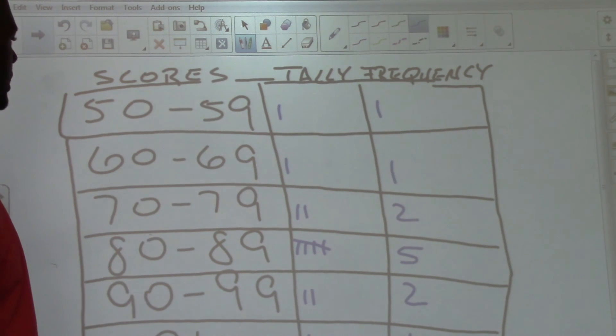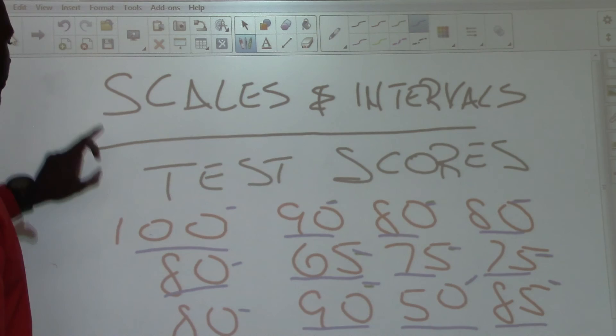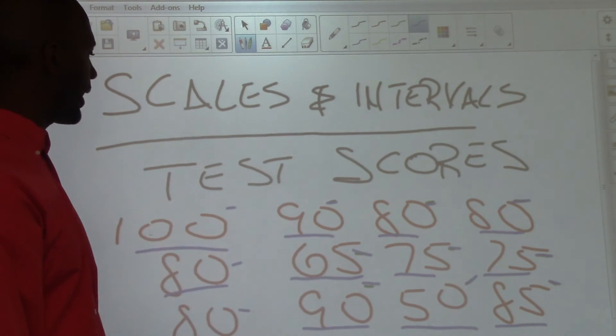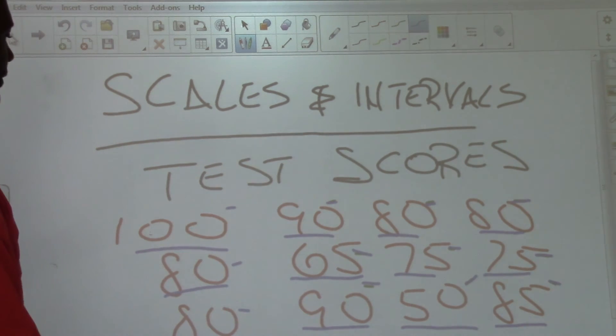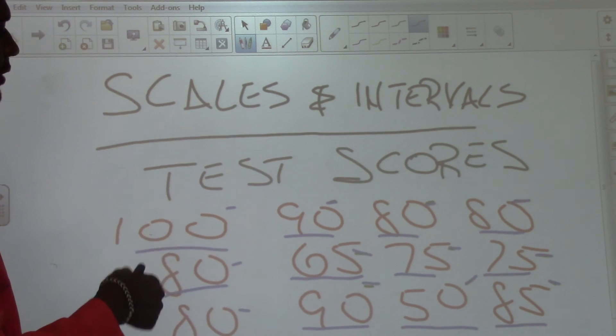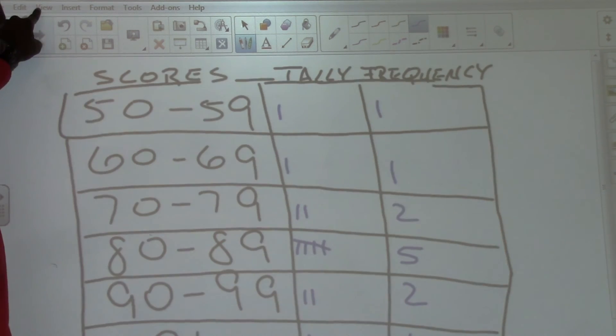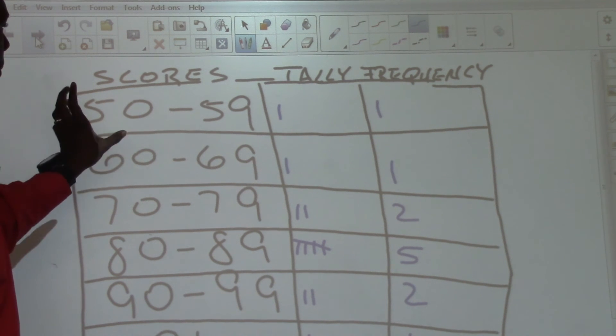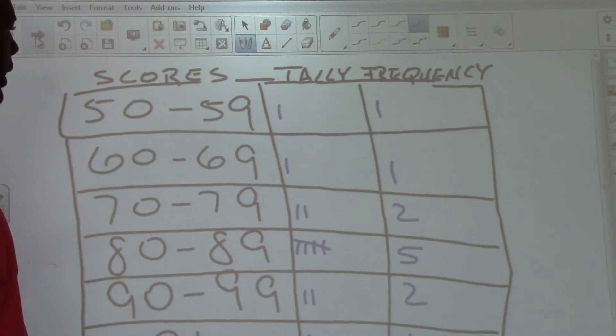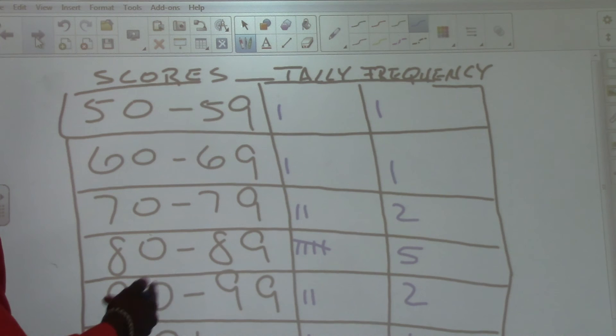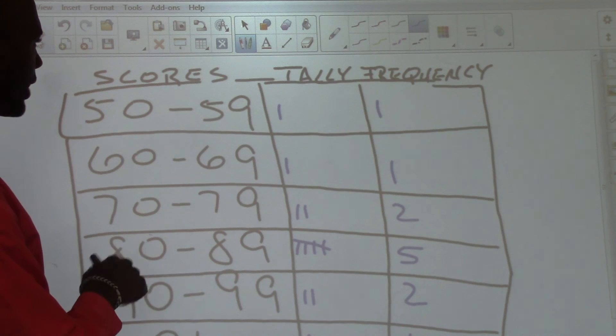We've created a frequency table for the scores that we made of 100, 90, 80, 80, 65, 75, 75, 80, 90, 50, and 85. We've created a frequency table to show how many students scored between 50 and 59, 60 and 69, 70 and 79, 80 and 89, 90 and 99, and 100.